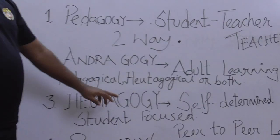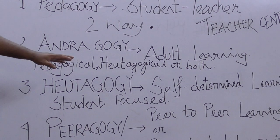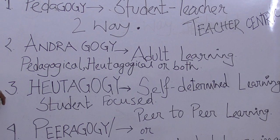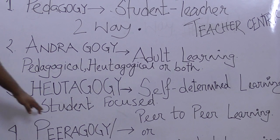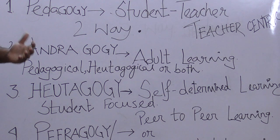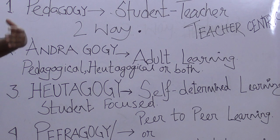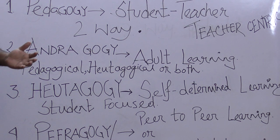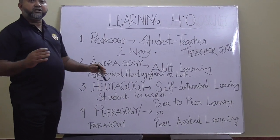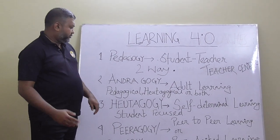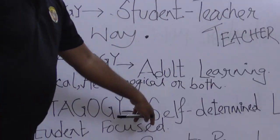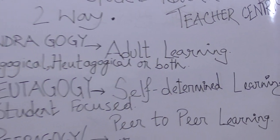The third approach is called heutagogy, otherwise known as self-determined learning. It is also a process to teach adults and is student-focused. Students fix the pace, the subject, and even choose the teacher. In this approach the student is central and the teacher is a helping force. So heutagogy means self-determined learning for adults.